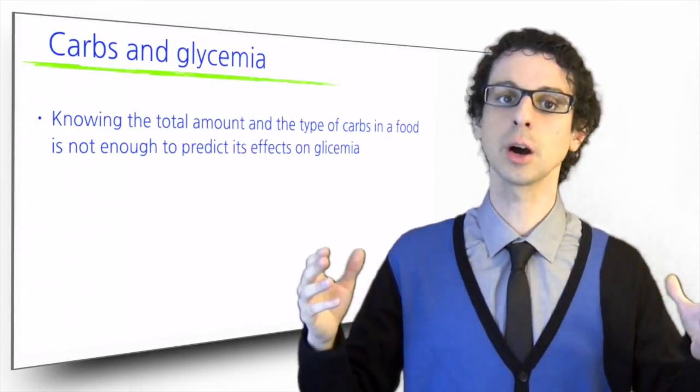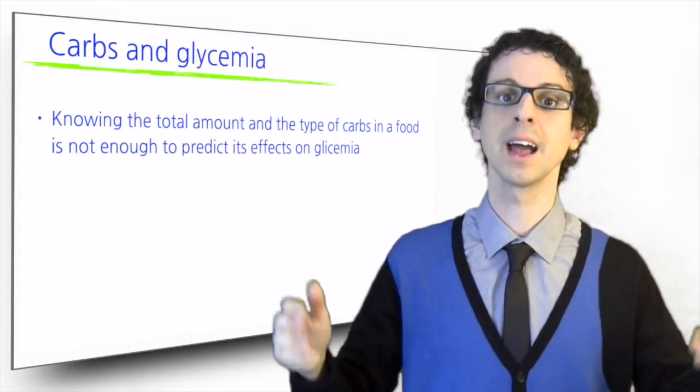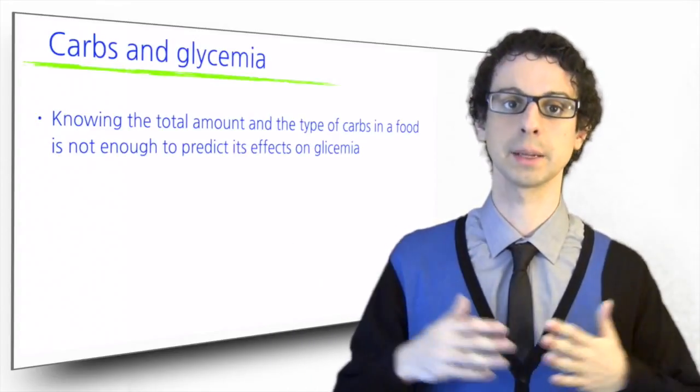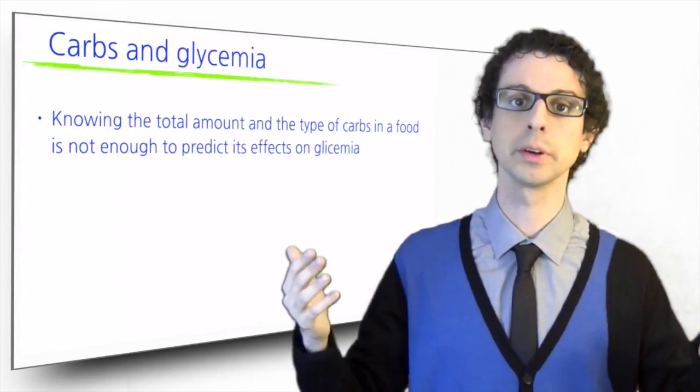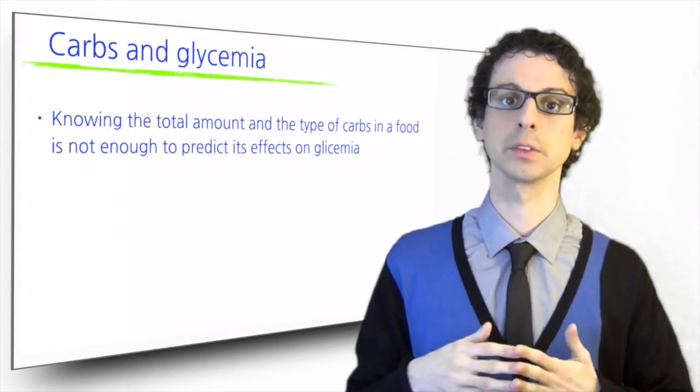There are some foods that are rich in complex starches, such as white bread, that raise blood glucose quickly and abruptly, whereas some fruits rich in simple sugars, such as blueberries, barely raise blood glucose at all.